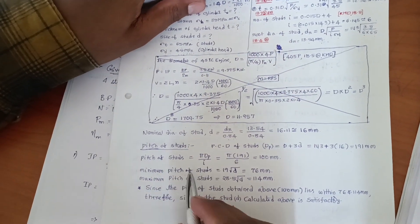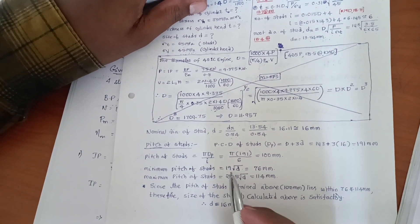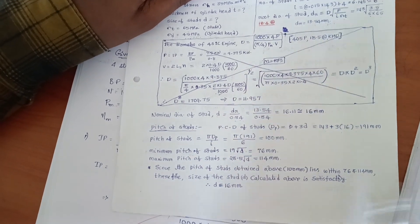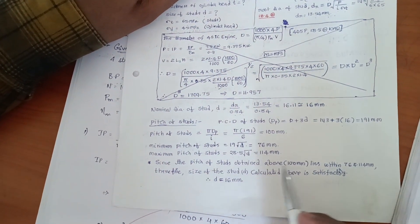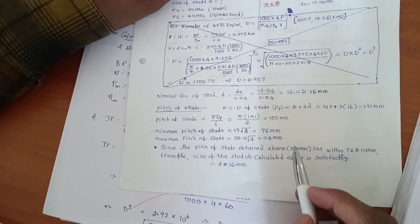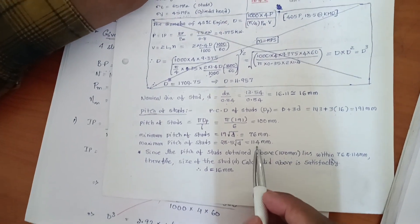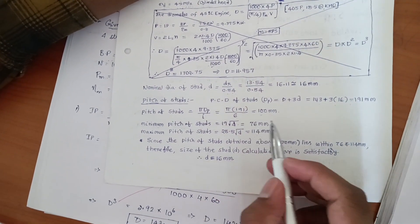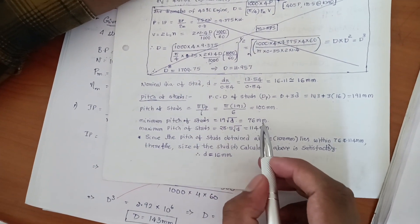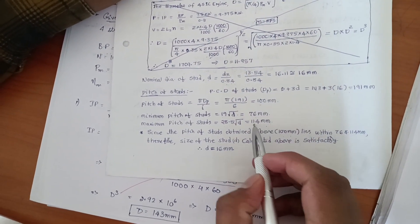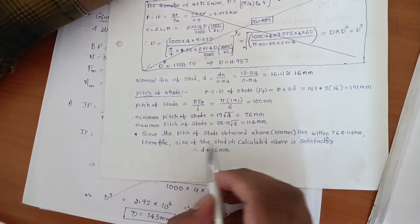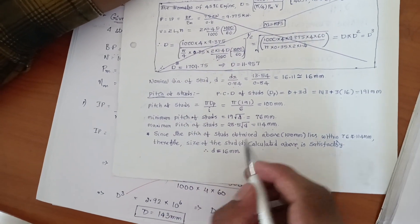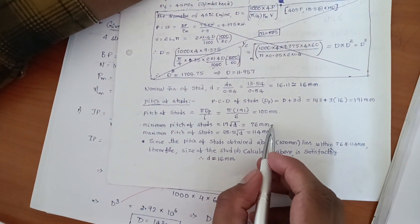We must check whether the pitch lies within acceptable limits. The minimum pitch is 19√d and the maximum pitch is 28.5√d, where d is the stud nominal diameter (16 mm). This gives minimum pitch of approximately 76 mm and maximum pitch of approximately 114 mm. The calculated pitch of 100 mm lies within 76 mm and 114 mm, so the design is satisfactory — the stud diameter calculated above is safe.